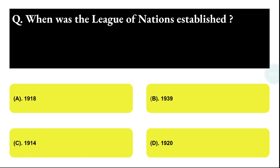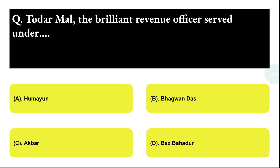Next question: when was the League of Nations established? Option A: 1918, Option B: 1939, Option C: 1914, Option D: 1920. The correct answer is option D, that is 1920.